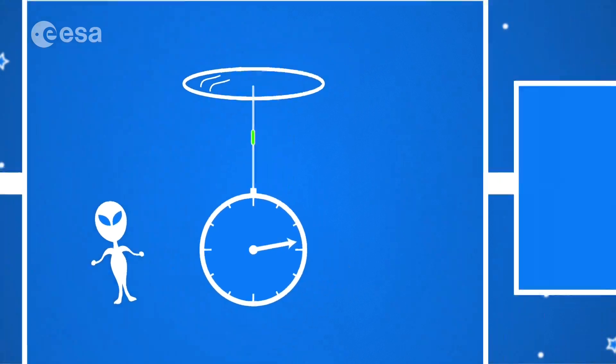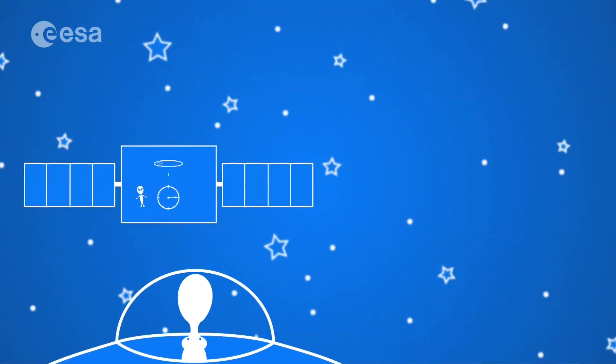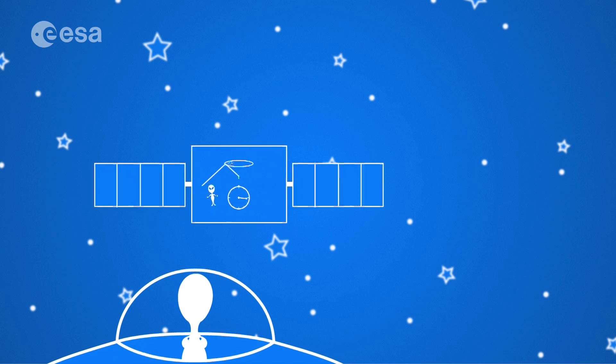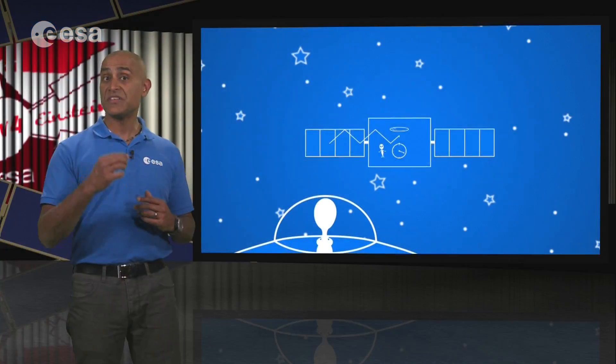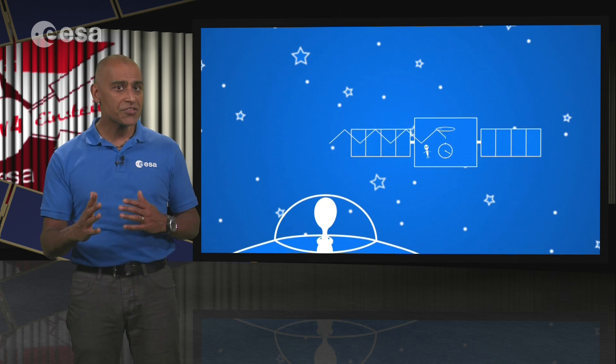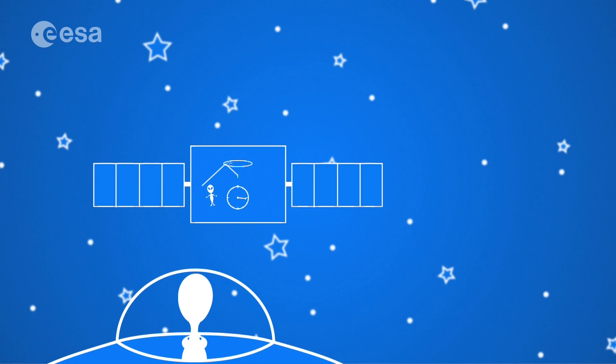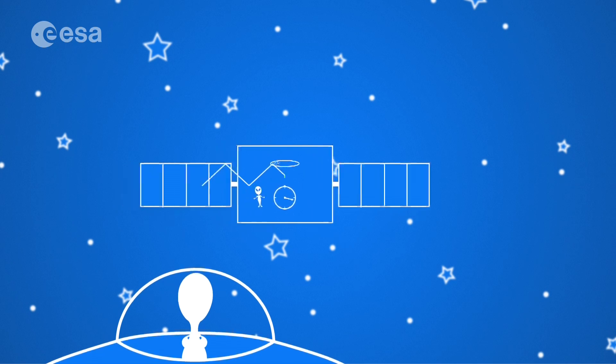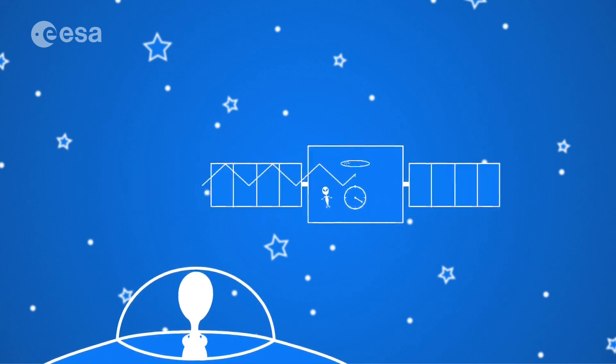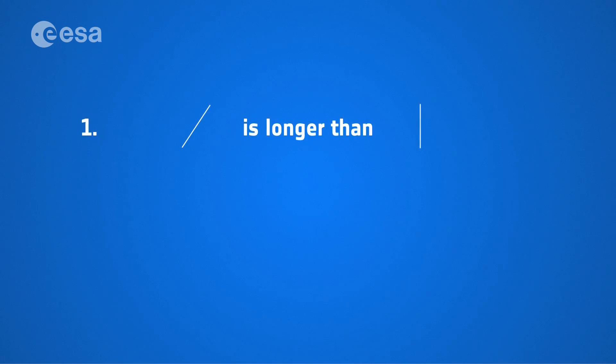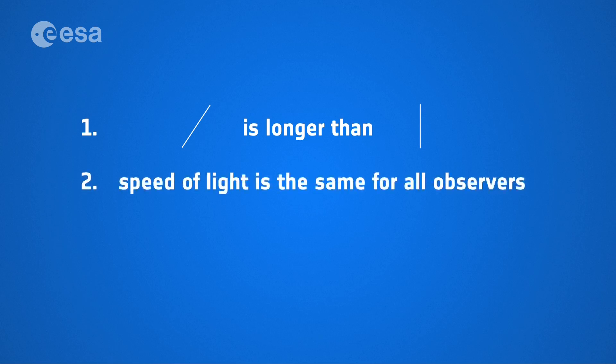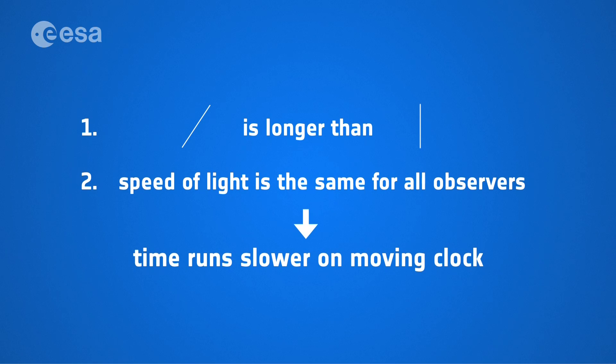Imagine that this laser clock is itself moving at high speed with respect to another observer. From this second observer's perspective, the path of the laser beam during each tick isn't a straight line. It's actually longer diagonal lines caused by the relative motion of the clock. And since light can only travel at this constant speed, the time interval for each tick on an apparent moving clock must be greater than the time interval for each tick on an apparent static clock.